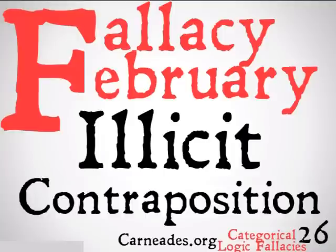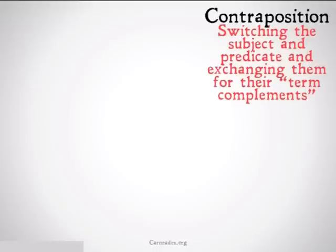Remember, contraposition works and is valid for A and O statements. Illicit contraposition is when you try using contraposition on E or I statements. Contraposition is switching the subject and predicate and exchanging them for their term complements. A term complement is taking S and getting non-S, taking horse and getting non-horse, taking key and getting non-key, and so on.